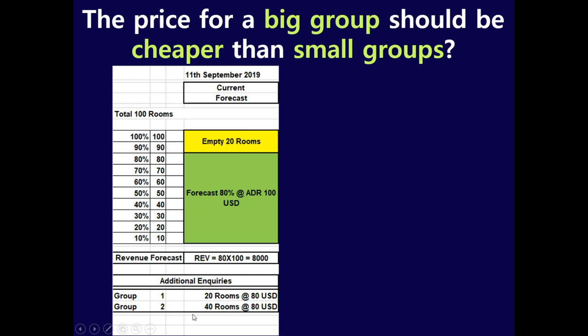Group 1 perfectly matches your 20 empty rooms — no displacement, 100% occupancy safely achieved. Group 2 has 40 rooms, which is bigger than the 20 empty rooms. By taking Group 2 you'd be guaranteed to be full, but the problem is you would need to refuse 20 last-minute bookings, since 80 existing rooms plus 40 group rooms equals 120, exceeding your 100-room capacity. Please pause and figure out which group is more profitable.